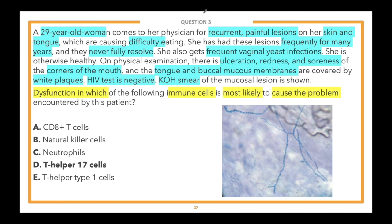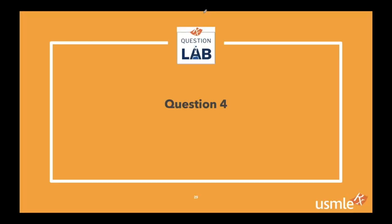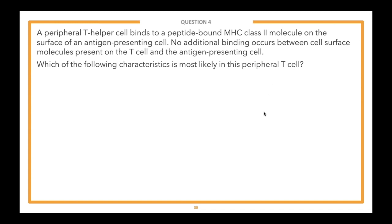Let's move on to our fourth and last question on immunology this evening — let's try to finish strong. The answer choices are covered up. Lead-in: which of the following characteristics is most likely in this peripheral T cell? Vignette: a peripheral T helper cell binds to a peptide-bound MHC class II molecule on the surface of an antigen-presenting cell. No additional binding occurs between cell surface molecules present on the T cell and the antigen-presenting cell. Which of the following characteristics is most likely in this peripheral T cell?